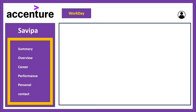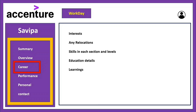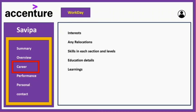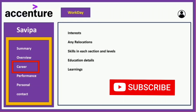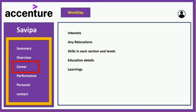The third section is Career. Here you can see your interests, any relocations you have done so far within Accenture, and your skills with their levels — for example, your Java skill level might be 2 or 3. Anyone looking to hire you for a project will view this Workday profile. It also includes your education background up to graduation, and any learnings or certifications you have completed so far.